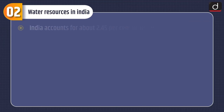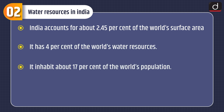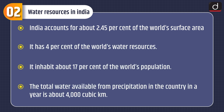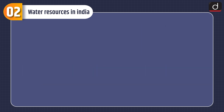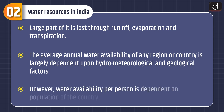Now let's discuss about water resources in India. India accounts for about 2.45 percent of the world's surface area. It has 4 percent of the world's water resources, and it inhabits about 17 percent of the world's population. The total water available from precipitation in the country in a year is about 4000 cubic kilometers. A large part of it is lost through runoff, evaporation and transpiration.